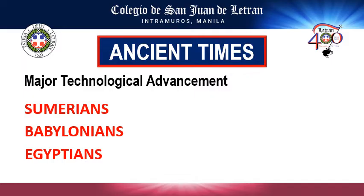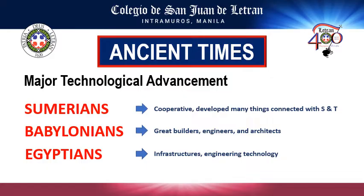Having covered the problems encountered during ancient times, let's now proceed to the major technological contributions made by Sumerians, Babylonians, and Egyptians. Sumerians were known for being very cooperative in the development of science and technology. Babylonians were known as weight-wielders, engineers, and architects. And Egyptians were known for their infrastructure and engineering achievements that still amaze people today.